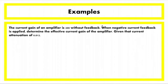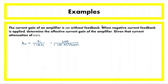For example, the current gain of an amplifier is 200 without feedback. When negative current feedback is applied with a current attenuation of 0.012, determine the effective current gain AIF. We substitute into AIF equals AI divided by (1 plus beta·AI): that is 200 divided by (1 plus 0.012 times 200), giving AIF equal to 58.82.